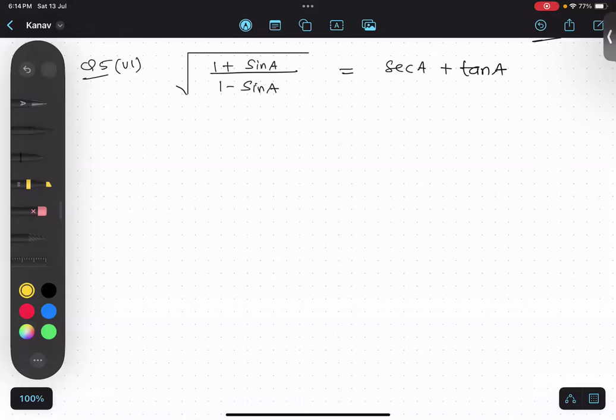So as I told you earlier, this is already in sine and cosine form and nothing can be done, no identity is possible. So what we will do, we will do the rationalization.